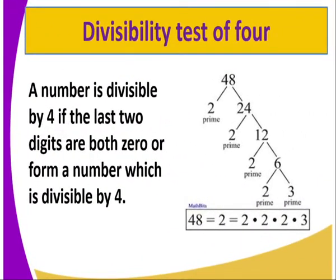We can go to the divisibility test of 4, and whereby we are going to say a number is divisible by 4 if the last two digits are both 0 or form a number which is divisible by 4. For example, we can have a number like 48. Actually 48, the last two digits, they are not both 0s. But we can go to our next statement whereby we are saying they form a number which is divisible by 4. 48 is divisible by 4 because we are going to get 12.